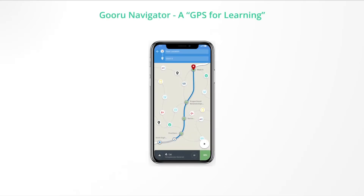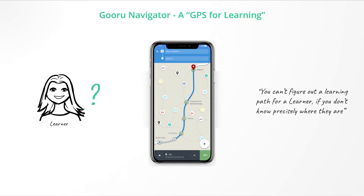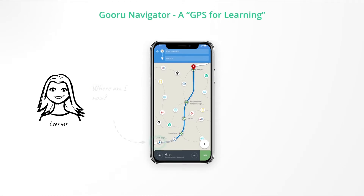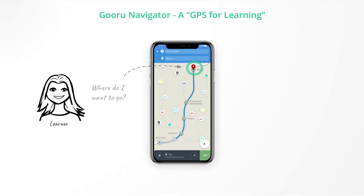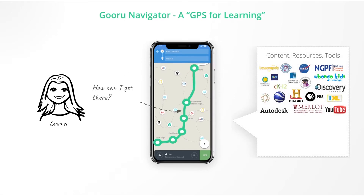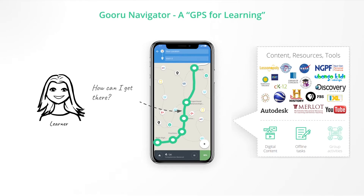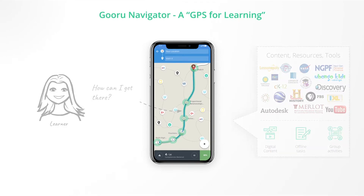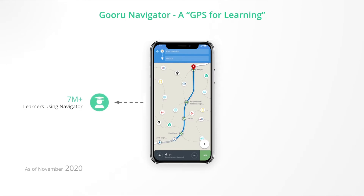At Guru, we have built a GPS for learning that starts with the premise that you can't figure out a learning path for a learner if you don't know precisely where they are. Guru Navigator accurately locates the learner across many facets including knowledge in various subjects, and then guides them to any learning destination using the most optimal content resources and tools from any interoperable providers — including digital content, offline tasks, or group activities like projects and presentations.